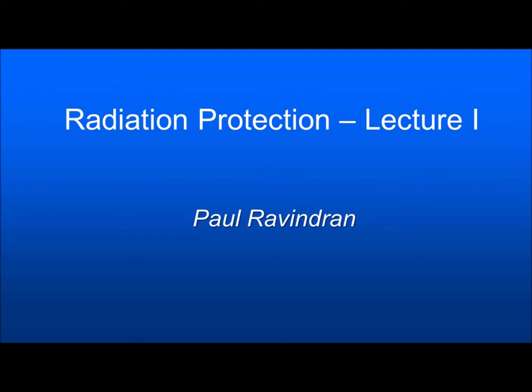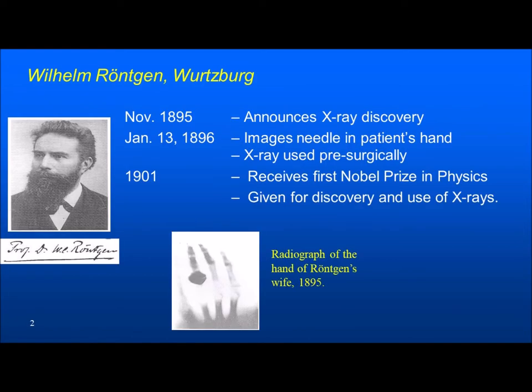I will start with very basic things such as discovery of X-rays, radioactivity, etc., just for the sake of continuity. It all started in the year 1895 when Röntgen, who was working with Crookes tube, came across an unknown type of radiation that could affect radiographic plates. Because it was unknown, he termed it as X-rays, and thus started one of the greatest discoveries in medicine — X-radiation.